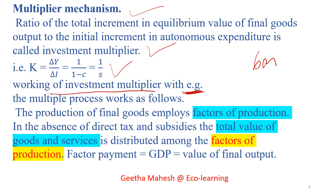The factors of production are land, labor, capital, and organization. The returns are: land earns rent, labor earns wages, capital earns interest, and the organizer earns profit.